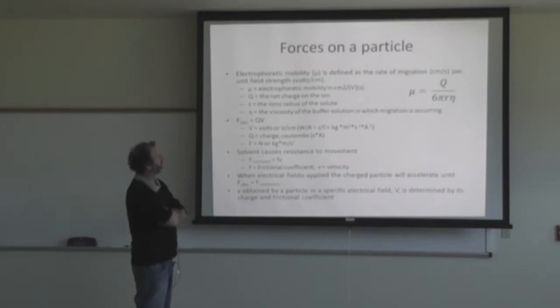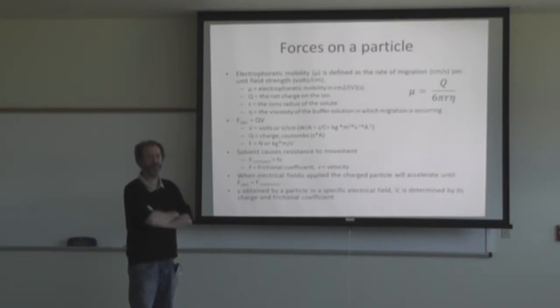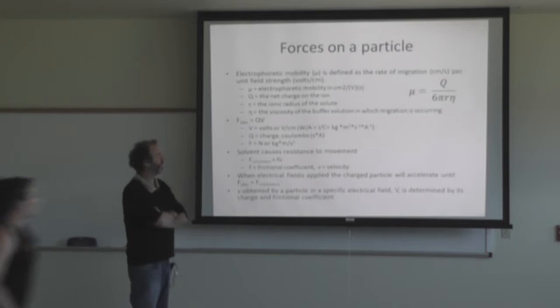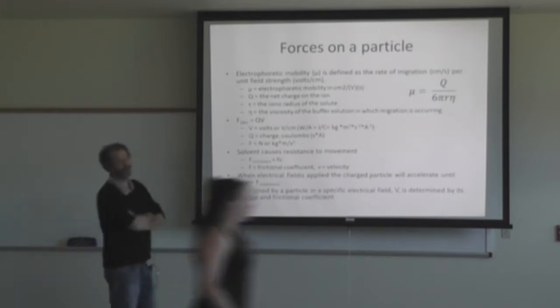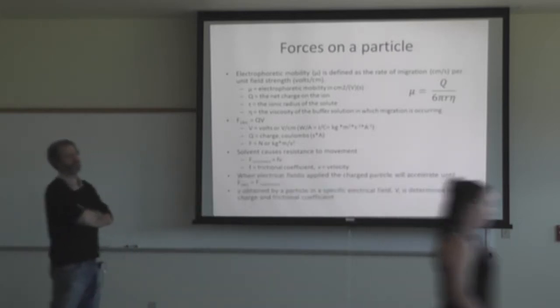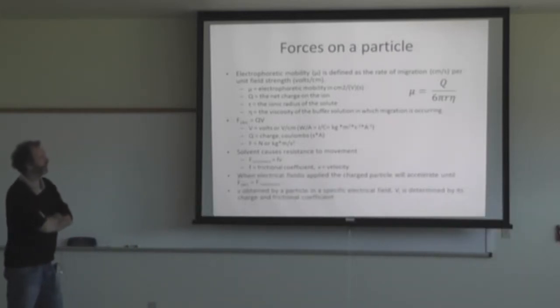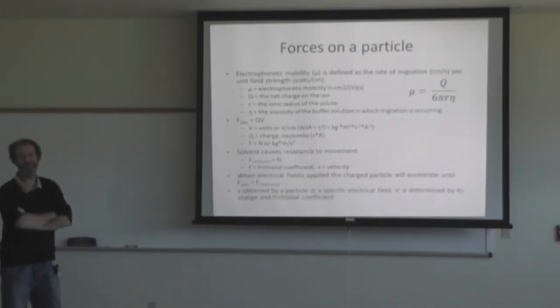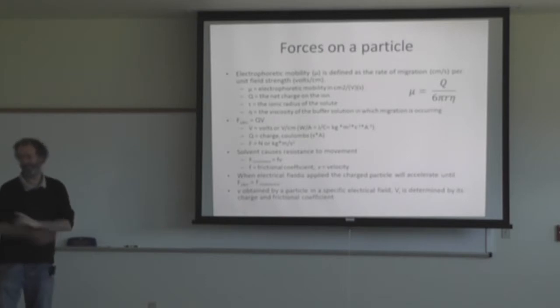There's a mistake here though — obviously. You can see it. R and this — what is this? Tau? And this is R. So this should be an R. Why would it be an R? For radius — the ionic radius.